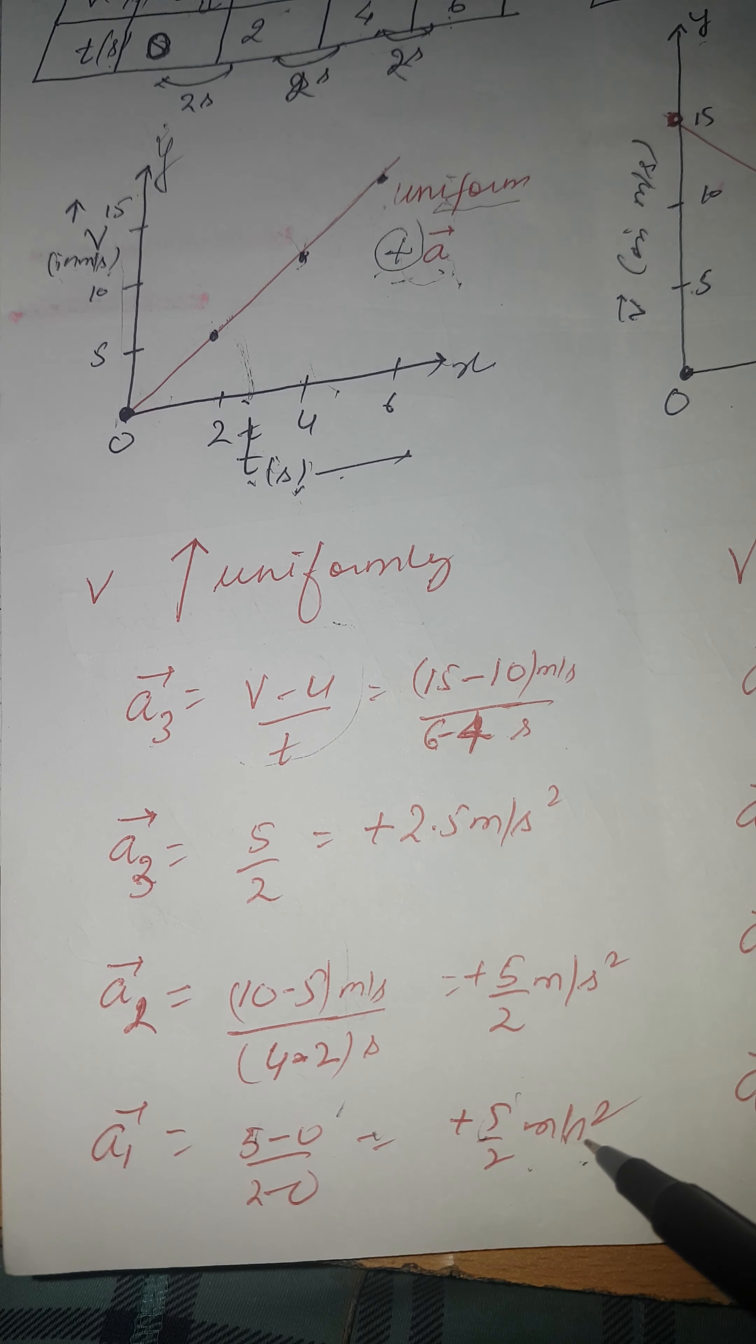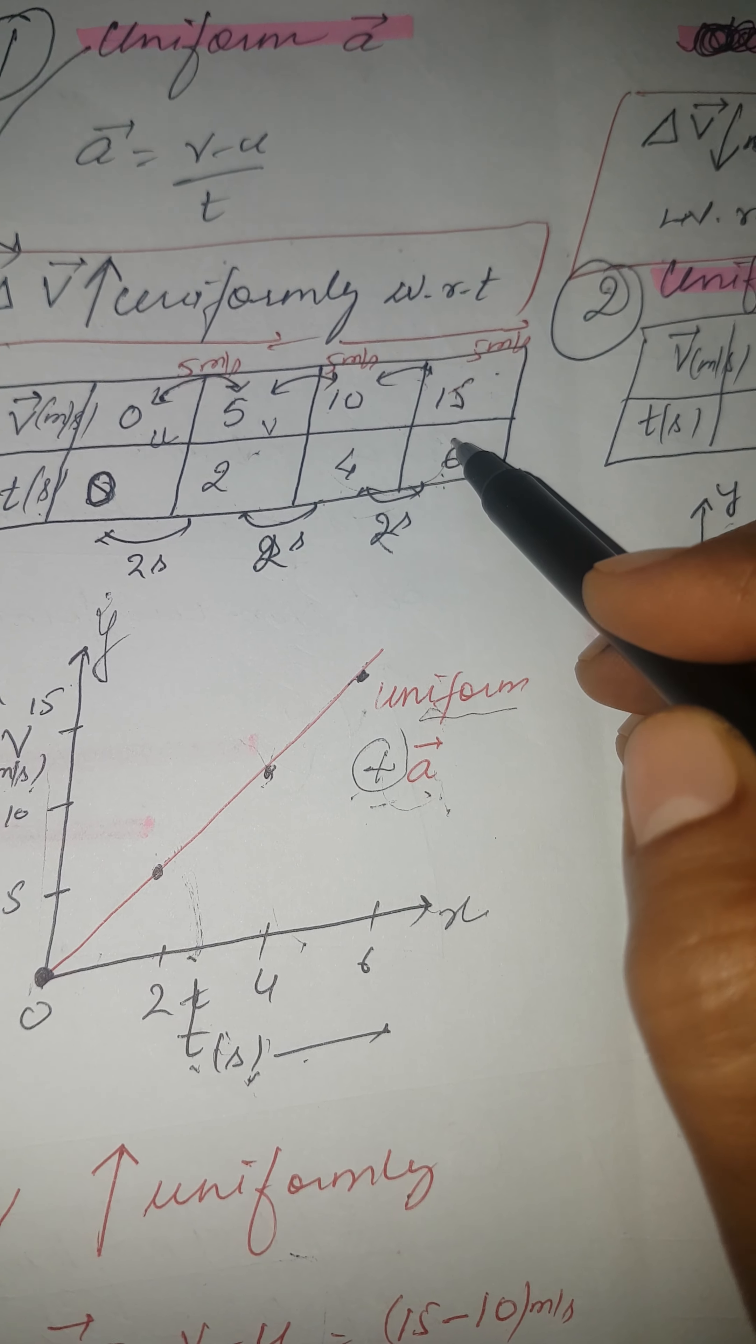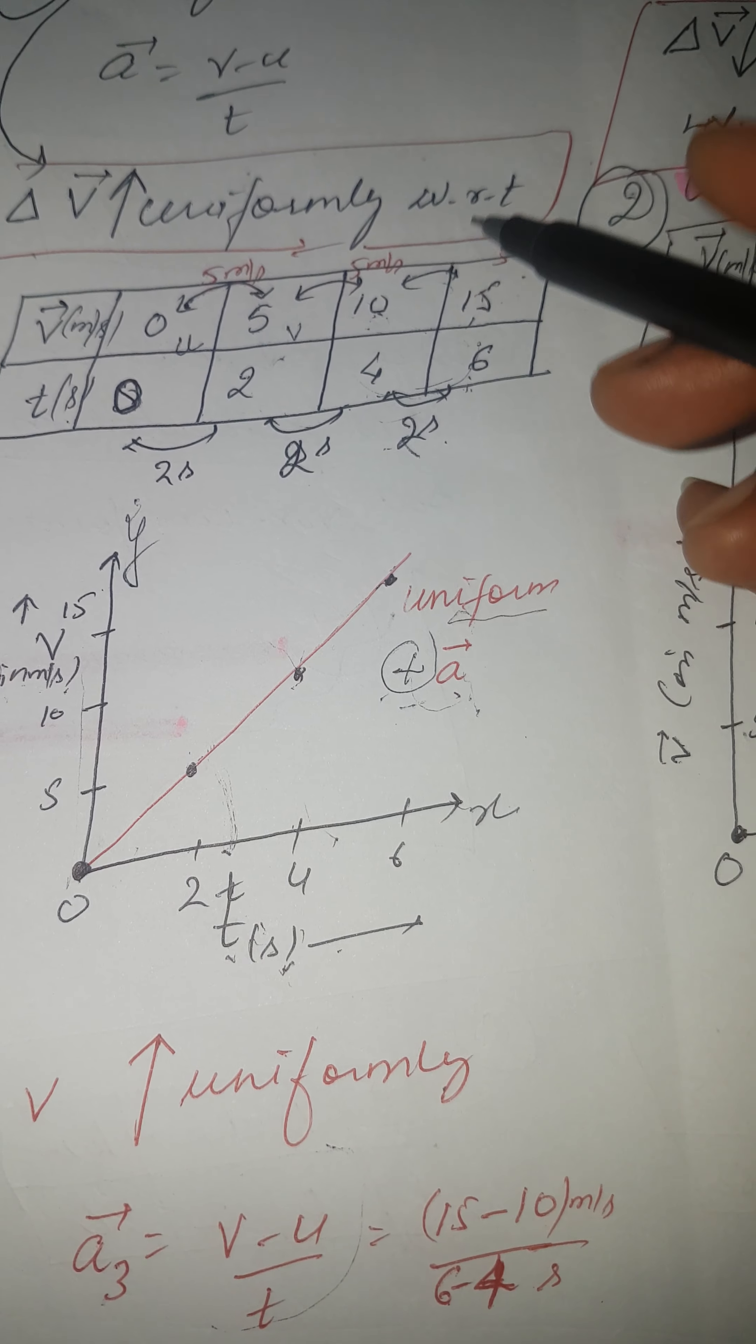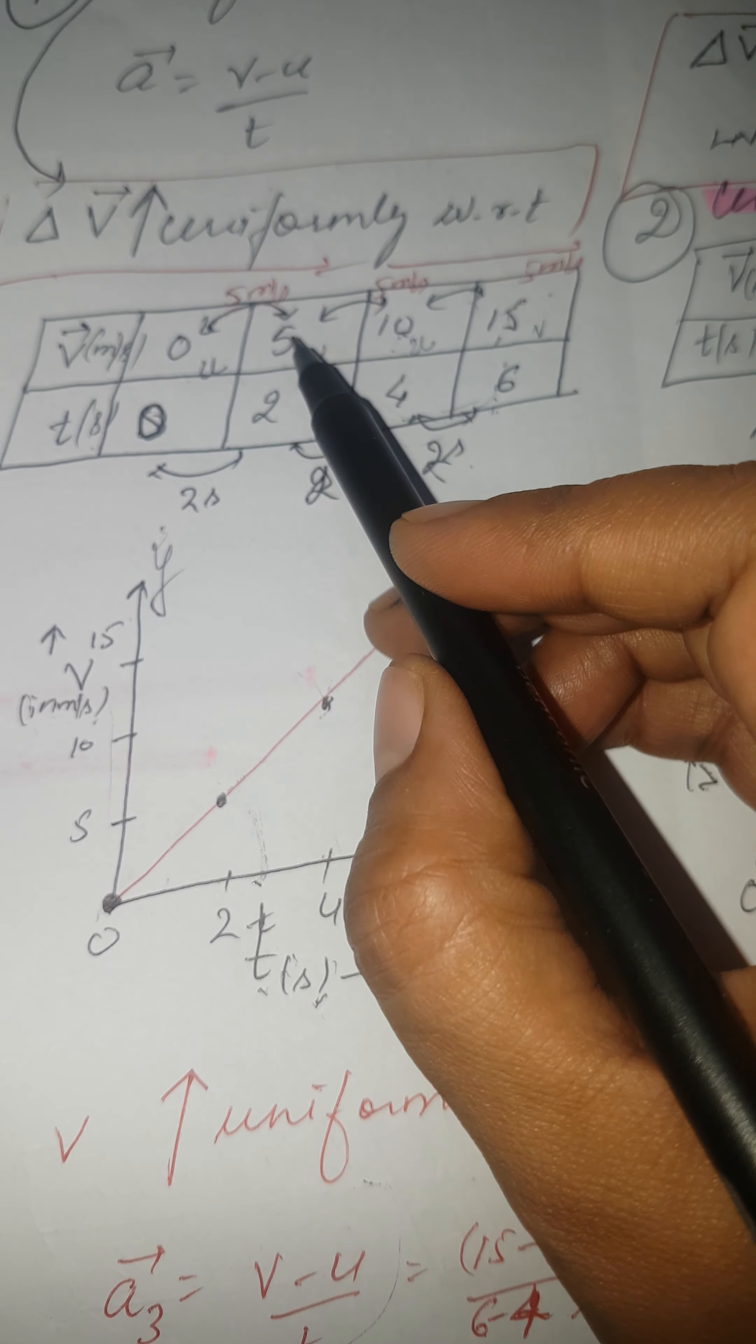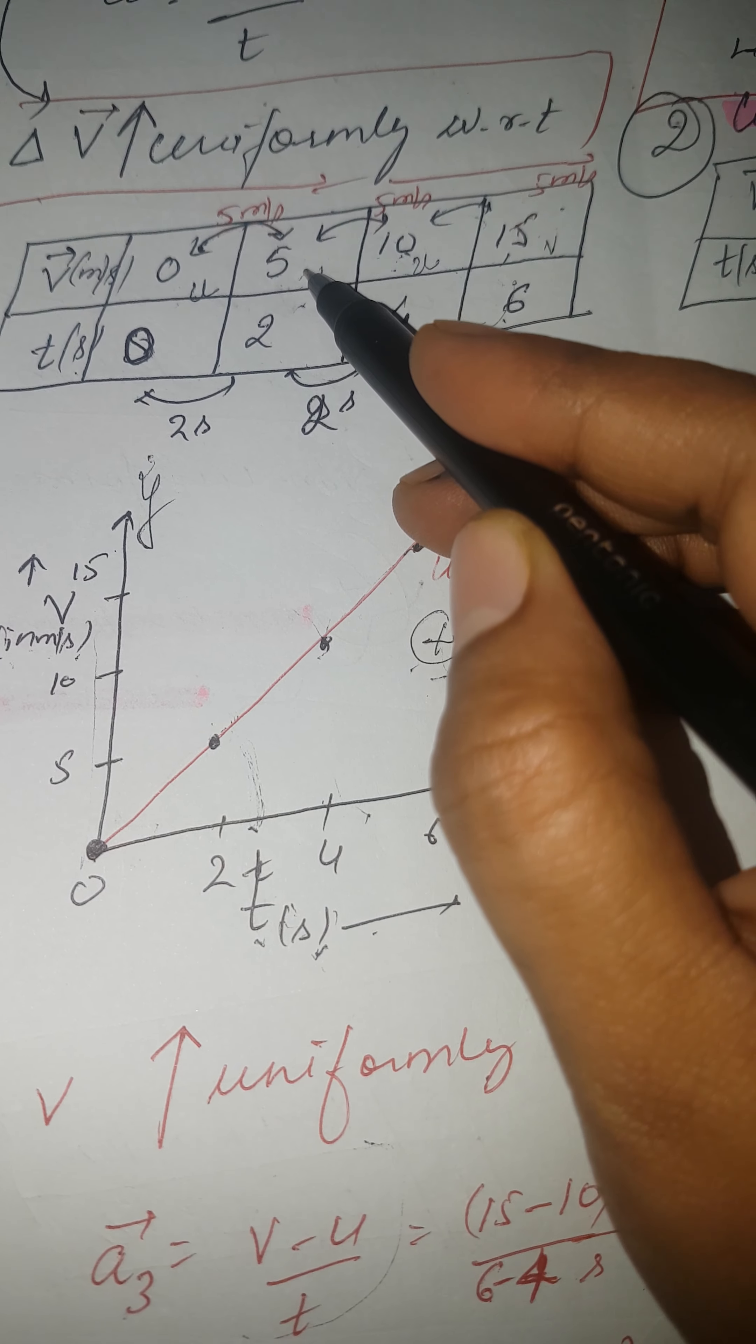You get positive 5 by 2 meter per second square as acceleration. Now let us see this case in third range of time, from 4 to 6 seconds. Time covered is 2 seconds. And this from 10 meter per second to 15 meter per second. This has become U in this interval and this has become V. If you are talking about this interval, this was U and this was V. Now let us come to second interval. This is V, this is U, and this will behave as V.